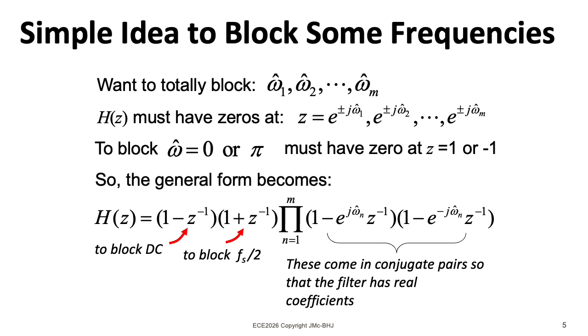Because these are occurring in complex conjugate pairs, we wind up with real coefficients when you multiply this out. Now, one issue is that although you will zero the frequencies you want, you don't really have much control over what's happening elsewhere.